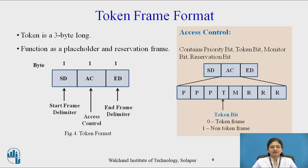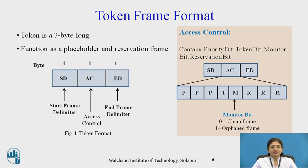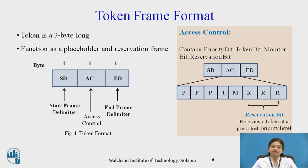The 4th bit is reserved for the token bit — if it is 0 then it is a token frame; if it is 1 it is a non-token frame. The M-bit is known as the monitor bit: when it is 0, the arrived frame is a clean frame; when it is 1, it is an orphan or erroneous frame. The last 3 bits are the reservation bits, used for reserving the token at a prescribed priority level.